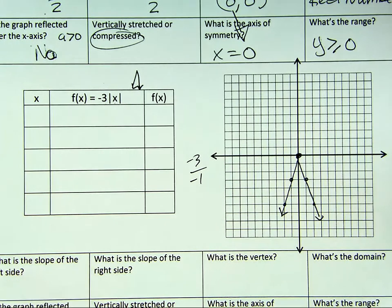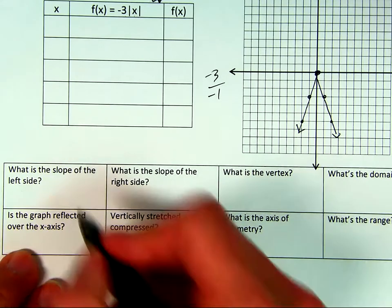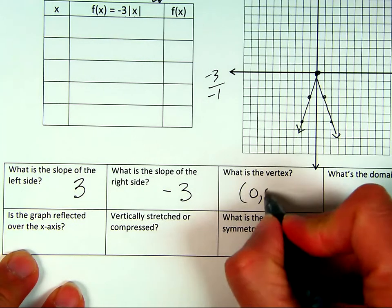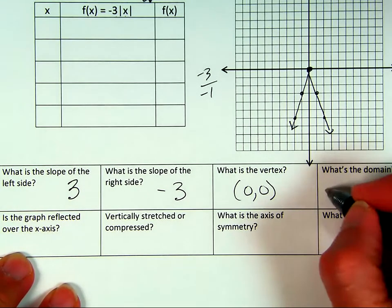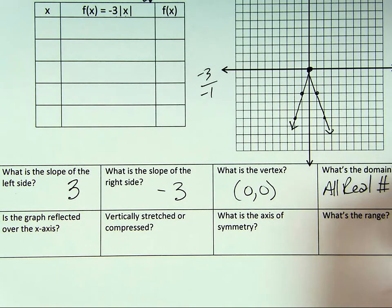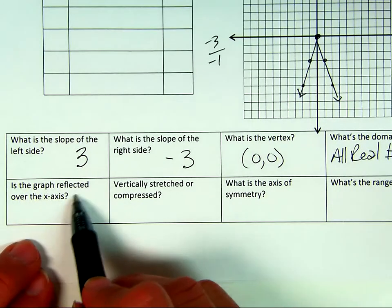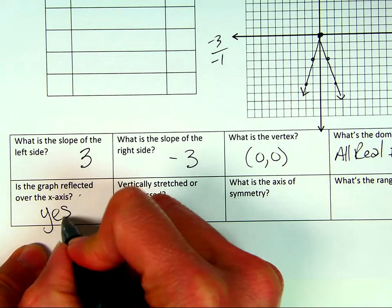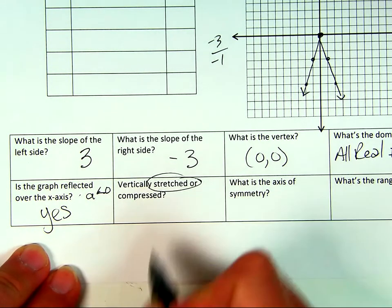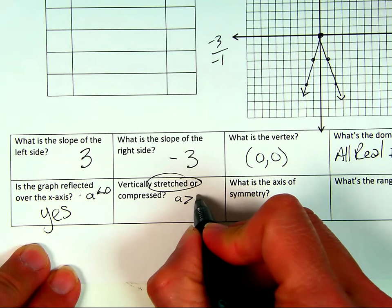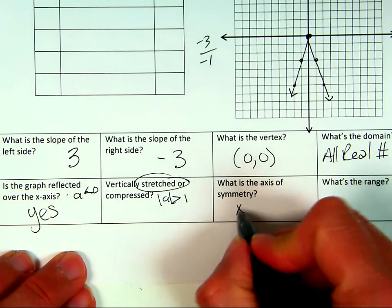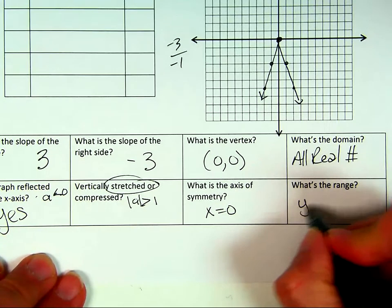Questions about y = −3|x|: slope on the left side is 3; slope on the right side is negative 3. Vertex: (0, 0). Domain: all real numbers. Is the graph reflected over the x-axis? Yes, because A is less than zero — A was negative three. Vertically stretched or compressed? Stretched, because the absolute value of A is greater than one. Axis of symmetry: x equals zero. Range: y is less than or equal to zero.